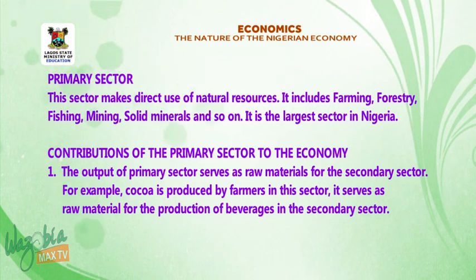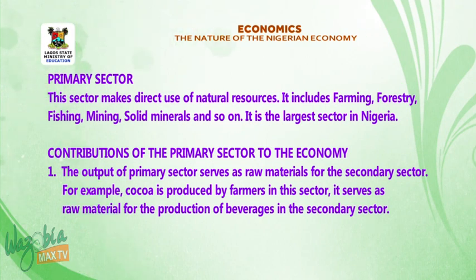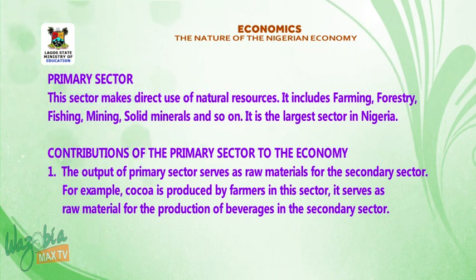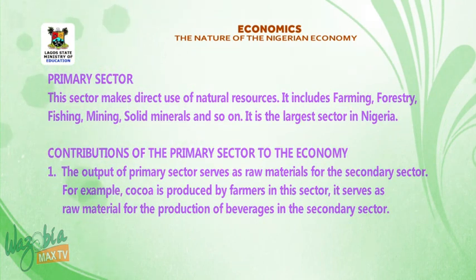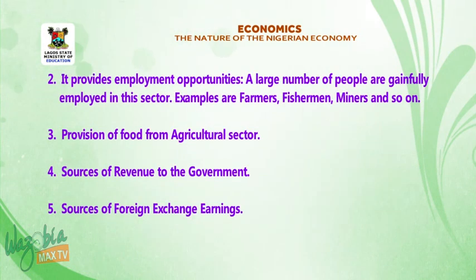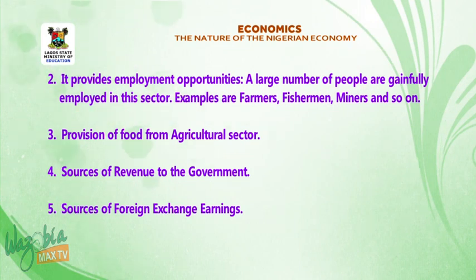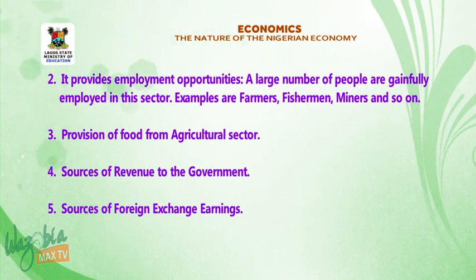Contributions of the primary sector to the economy. One, the output of the primary sector serves as raw materials for the secondary sector. For example, cocoa is produced by farmers in this sector and serves as raw materials for the production of beverages in the secondary sector. Number two, it provides employment opportunity. A large number of people are gainfully employed in this sector, such as farmers, fishermen, and miners.